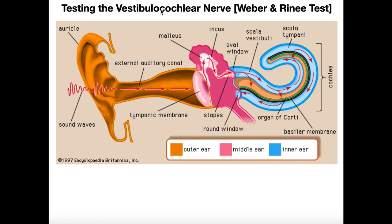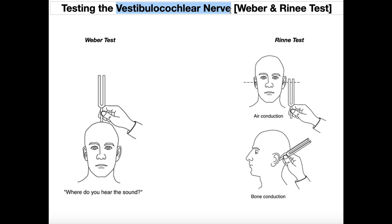To test whether we can potentially implicate the vestibulocochlear nerve, cranial nerve eight, in the hearing loss, we have to run two tests: the Weber and the Rinne test. These two tests are very similar, but they have to be done together — you can't get a result with one in isolation.